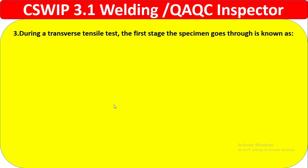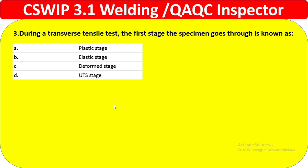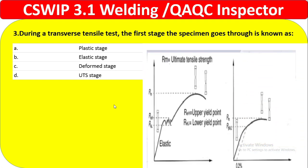Question 3: During a transverse tensile test, the first stage the specimen goes through is known as — referring to the stress-strain diagram. Plastic stage is not first; deform stage is not the first stage either; UTS stage comes after elastic. Looking at the stress-strain diagram: elastic, then lower yield point, then upper yield point, then UTS. The elastic stage is the first stage, so option B is the correct answer.